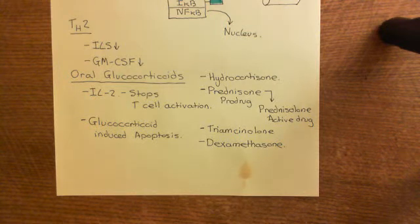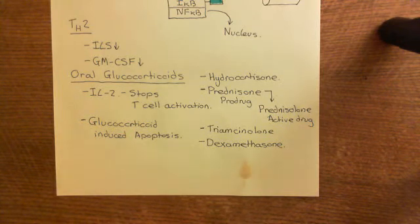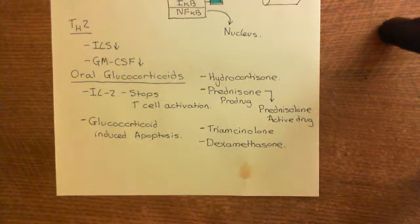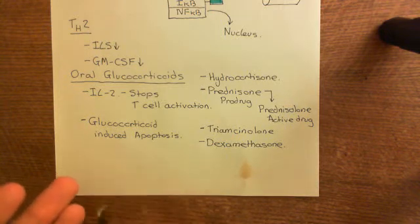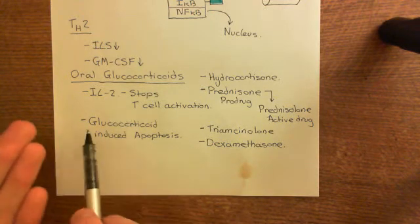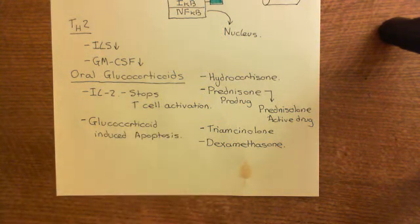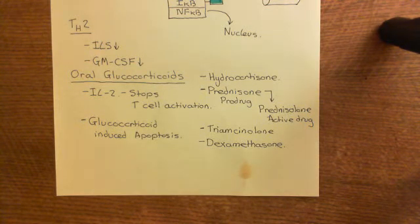If we remove all of the memory B cells, what's going to gradually happen is IgE levels are going to go down and down, and you're going to have nothing replenishing the IgE. Even if you're exposed to the allergen, because we have now stopped T cell activation and removed the memory B cells, you're not going to get any new IgE being produced against that allergen. So gradually, if you take this drug for long enough, IgE levels will continue to fall within your body.